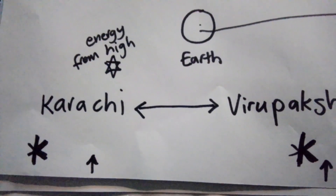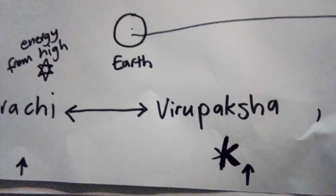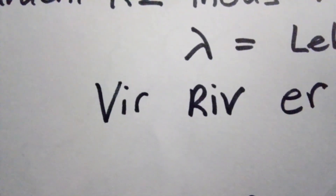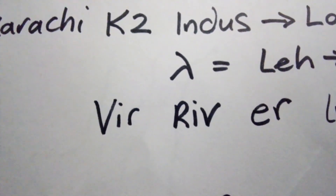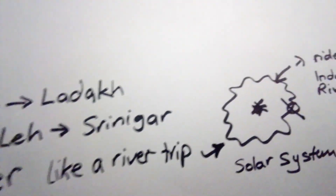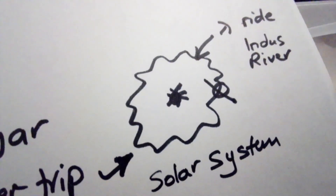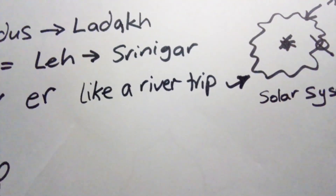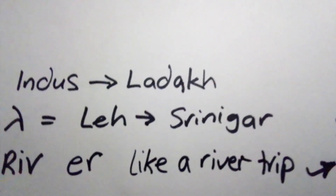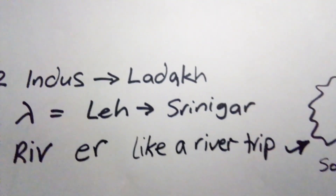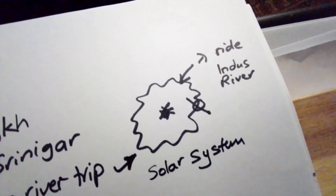We're looking at the Vir because Vir is river — R-I-V backwards — because it's not a river, but it's like a river. It's like a river trip. Our trip round the sun and the solar system — the Lambda ride is like a river trip. And they chose the trip from Leh to Srinagar on the upper reaches of the Indus River in Ladakh, and that was to take you to the star platform in Ladakh.